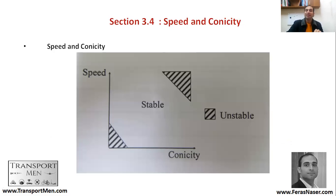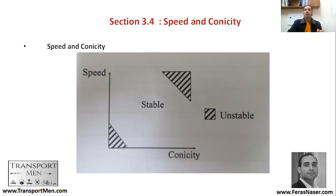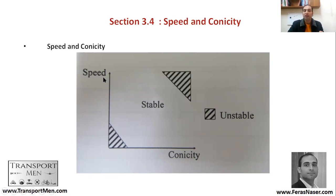Speed and conicity are closely related. If conicity is low and the train is going at low speed, you get an unstable hunting movement. If conicity is very high and speed is also high, you also get hunting. To achieve stable movement — traveling straight within a fixed corridor — you need the right combination of speed and conicity. Aim for stability in your wheel design and vehicle speed.